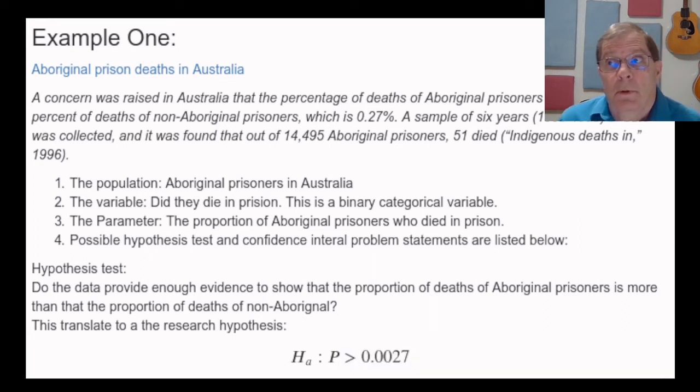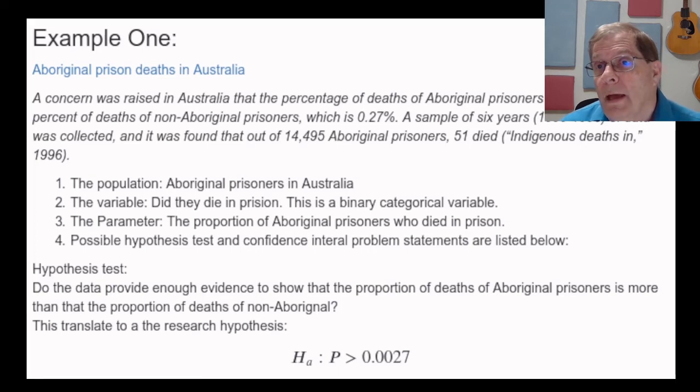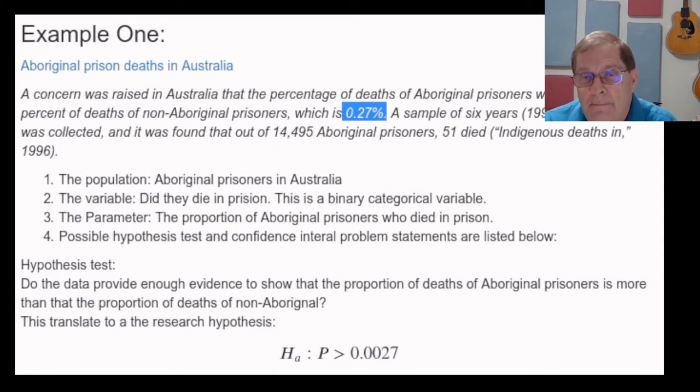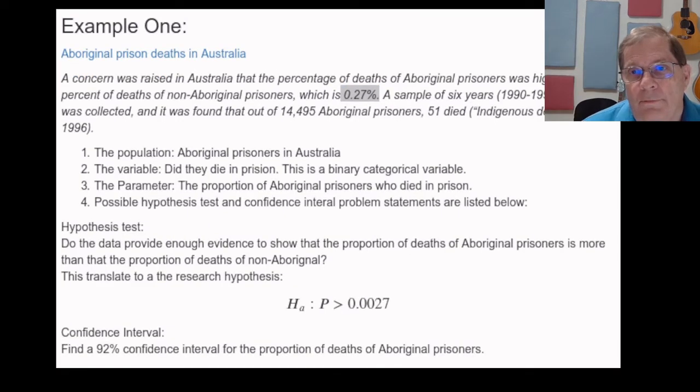So if P is the population proportion, now remember our population is the Aboriginal prisoners, and we want to know the proportion of them who died in prison. And we want to know if that is greater than, significantly greater than, the known fact about the proportion of deaths amongst non-Aboriginal prisoners.